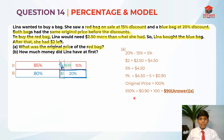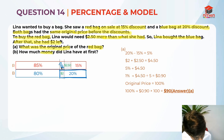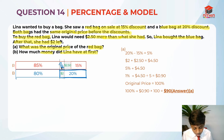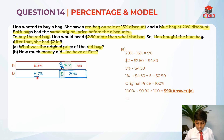Now let's move on to part B. Let's read the question: how much money did Lena have at first? We did this at the start — the amount she had is basically 80% plus $2. We already know 1% is 90 cents, so it's easier to find 80% now.